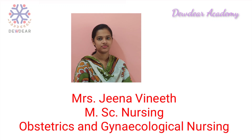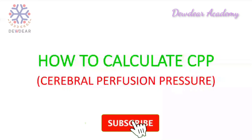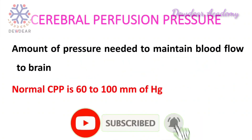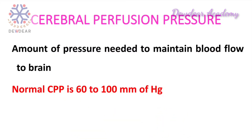Welcome to Doodier Academy. In this video, I am explaining how to calculate the cerebral perfusion pressure (CPP). Cerebral perfusion pressure is the amount of pressure needed to maintain blood flow to the brain, or it is the net pressure gradient that drives oxygen delivery to cerebral tissues.